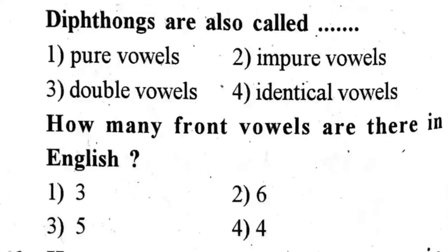Next question: Diphthongs are also called — first one, pure vowels. Second one, impure vowels. Third one, double vowels. Fourth one — the correct answer is fourth one.